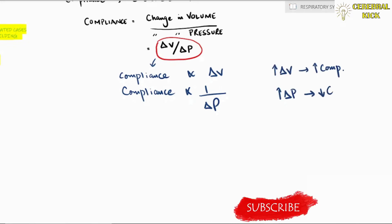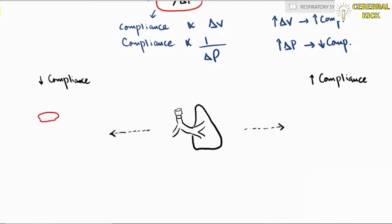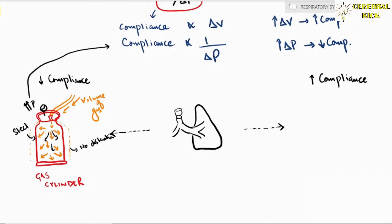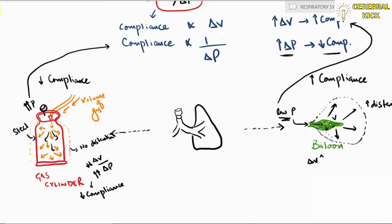Before going into lungs, let us discuss a very low compliant system: a steel gas cylinder filled with high pressure gas. When the cylinder is full, it will not distend, so pressure increases and compliance reduces. In contrast, a balloon is a high compliant system — a very small amount of pressure is required and the balloon inflates to accommodate more volume, with more volume change for less pressure change.